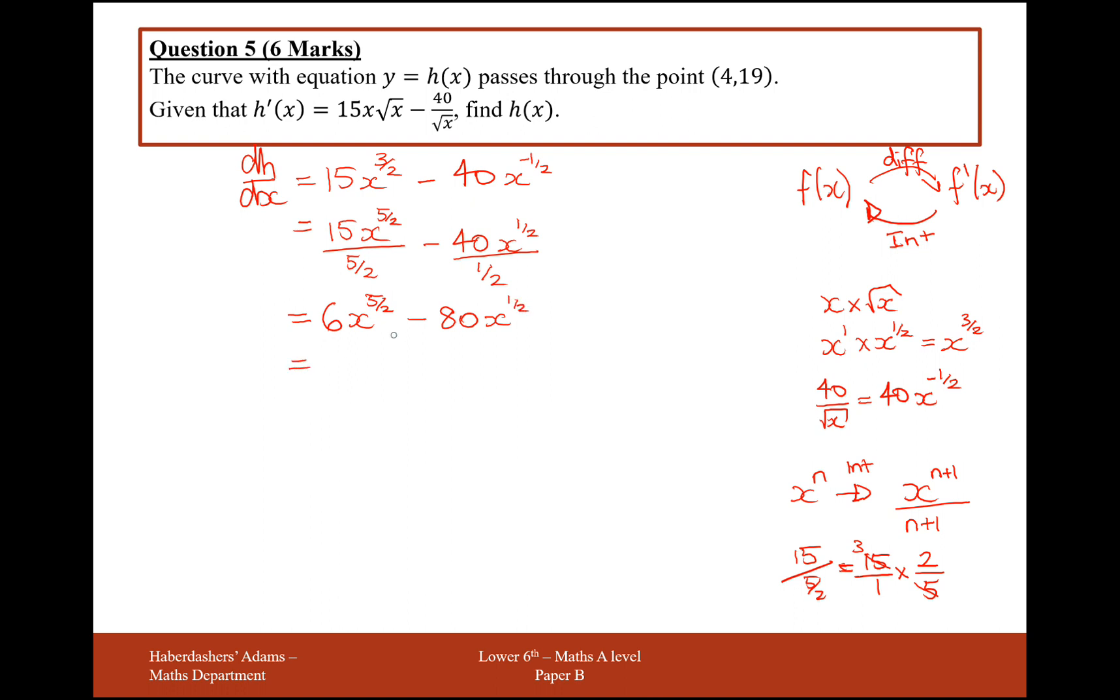And what I'll do is I'll put this back into surd form here, so it'll be 6 x squared square root of x, minus 80 times the square root of x. And this is h of x now. This is h of x, and this was dh dx.